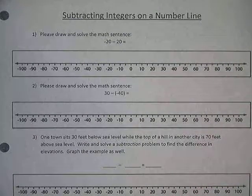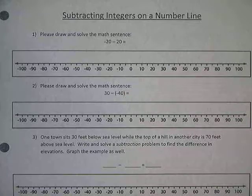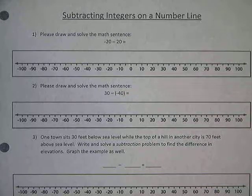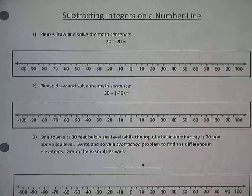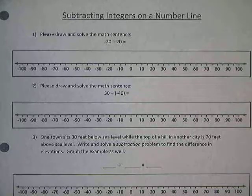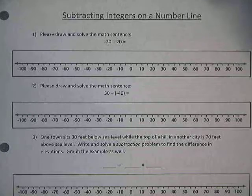We've spent a couple days now adding our positive and our negative numbers together. Remember, our positives, our negatives, and zero are considered integers if they're whole numbers. It does not include your fractions and decimals — those would be rational numbers. But integers are our whole numbers and their opposites and zero. So we've been adding integers together.